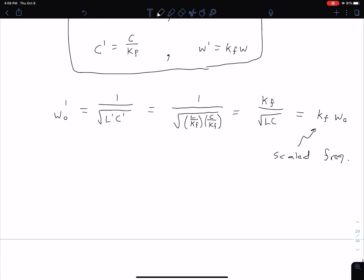We can also show that our bandwidth will change. Our new bandwidth B' equals kf times B. However, we can show that our quality factor Q' remains the same.